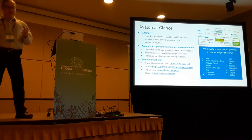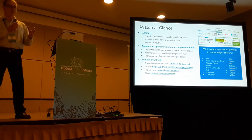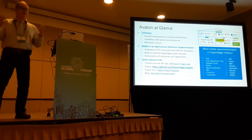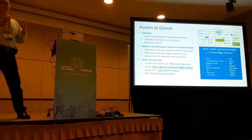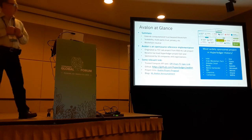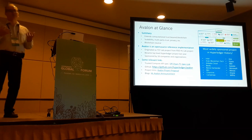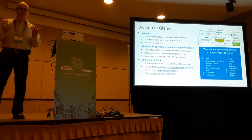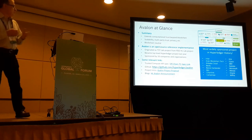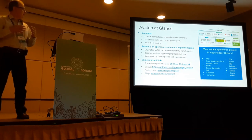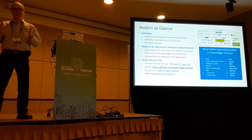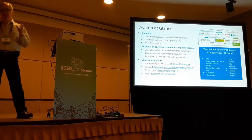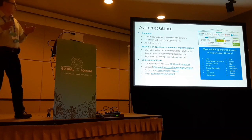Wouldn't it be great if we could extend computational trust beyond the blockchain itself and go to these additional applications? That is what Avalon is about — extending that computational trust beyond the blockchain to areas that are not on the blockchain. Avalon is not part of the blockchain; it runs side by side with blockchains, focusing on scalability, multiparty trust, privacy, and confidentiality. Avalon's implementation is blockchain neutral and can run with any blockchain or DLT with moderate integration effort.